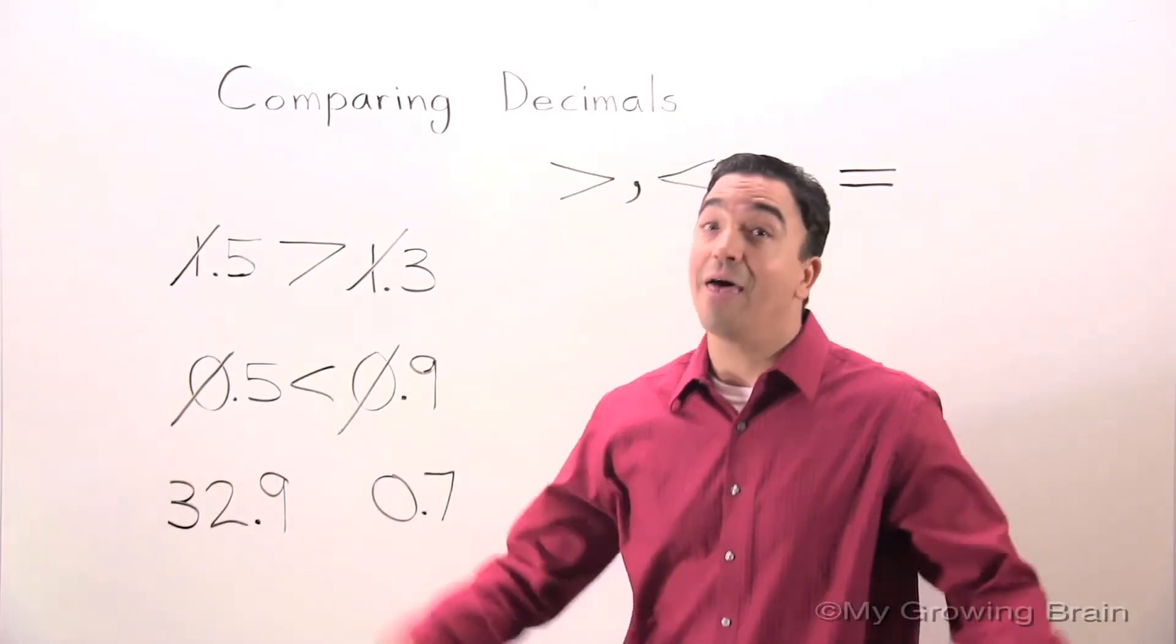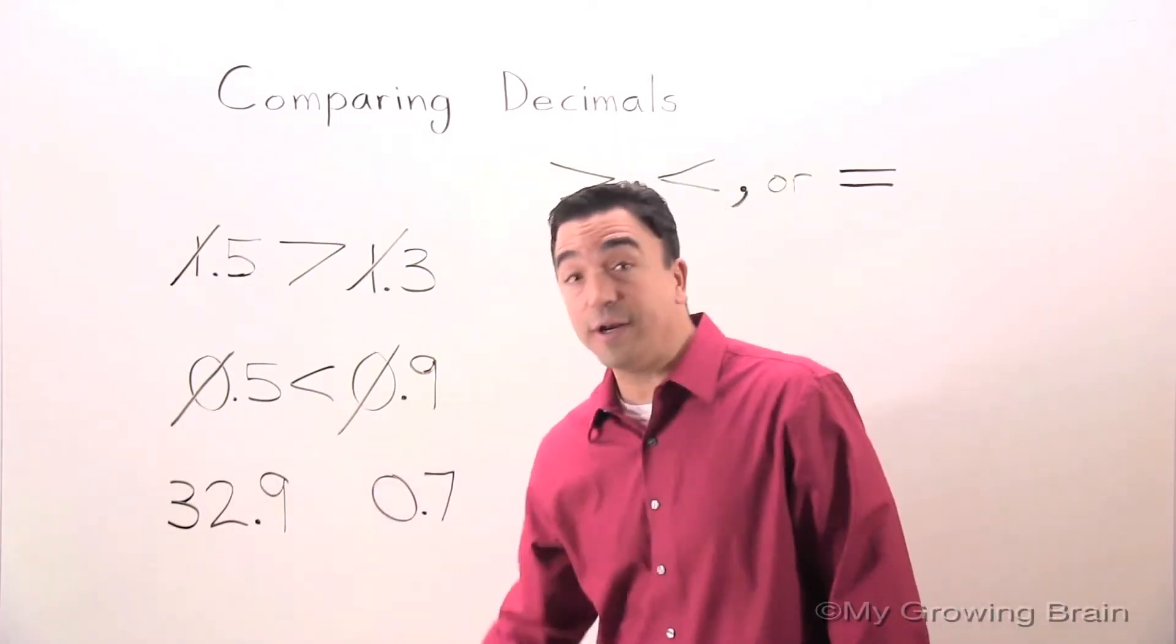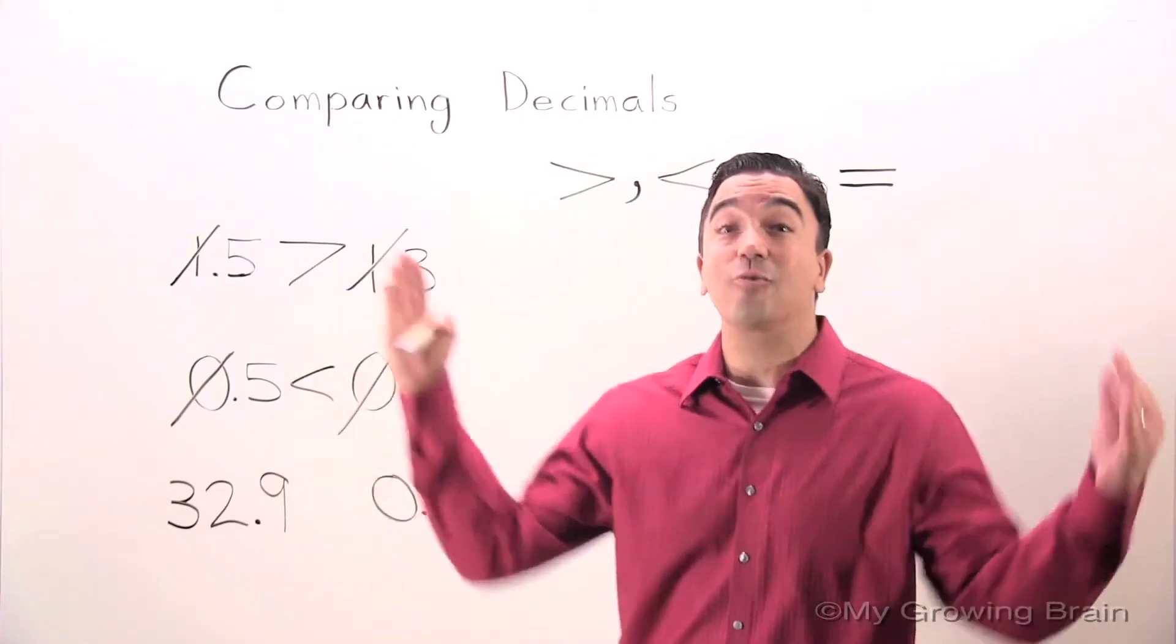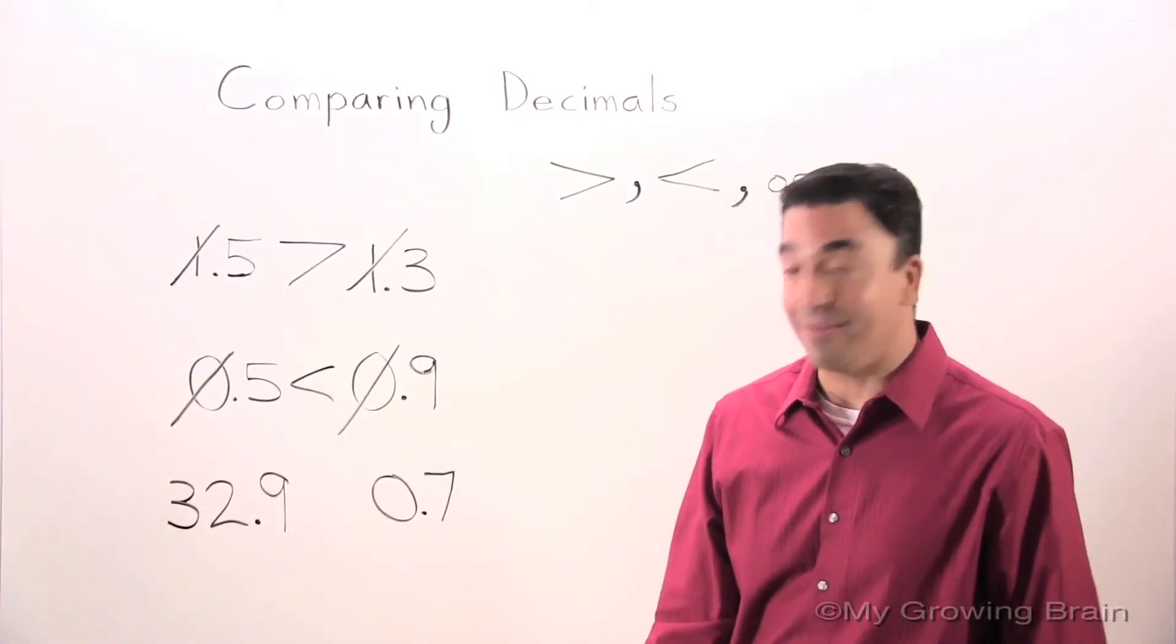In this decimal, there's a digit in the tens place. 32 and 9 tenths is greater than 7 tenths.